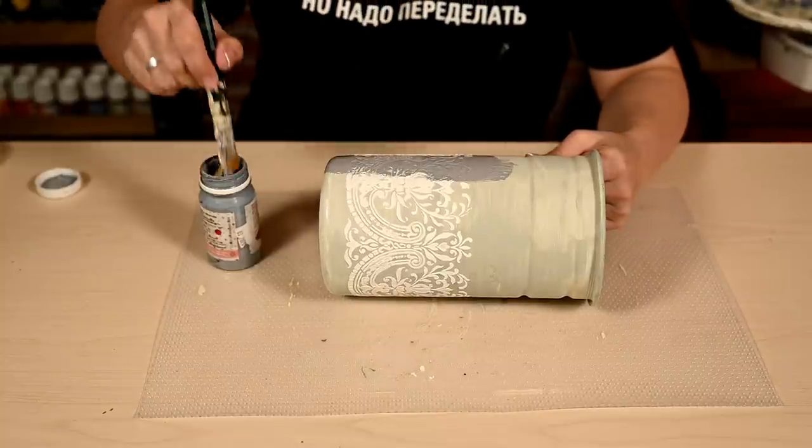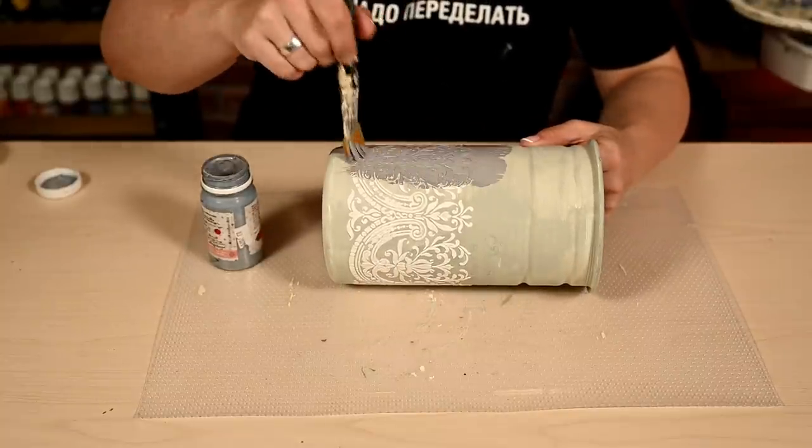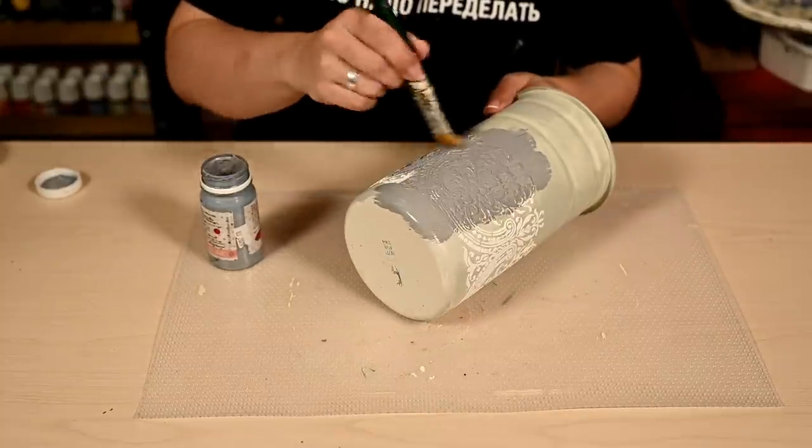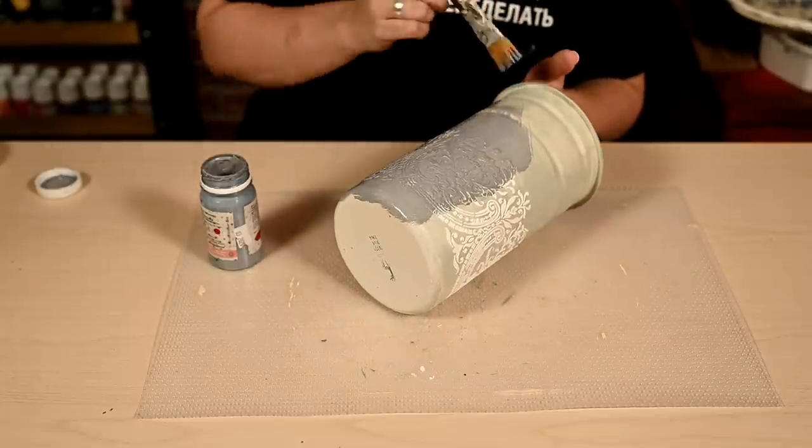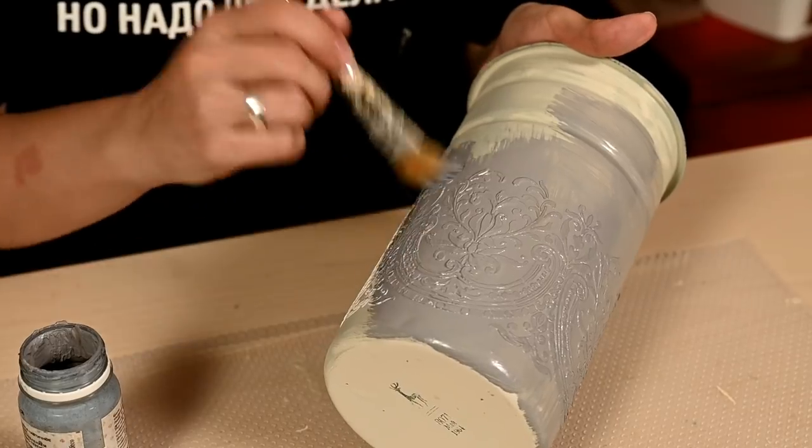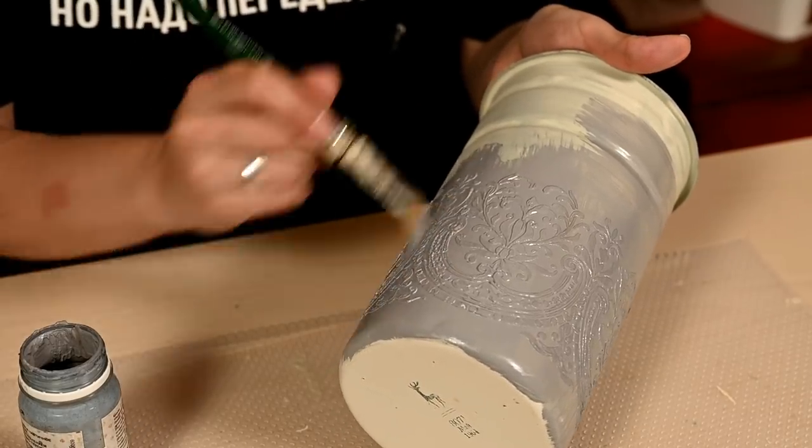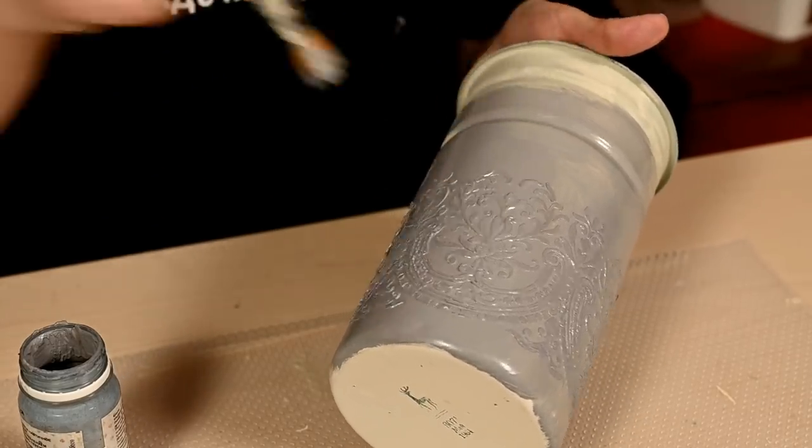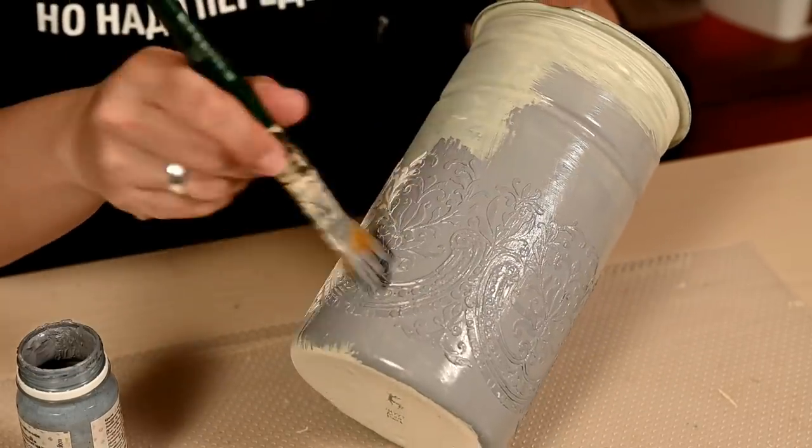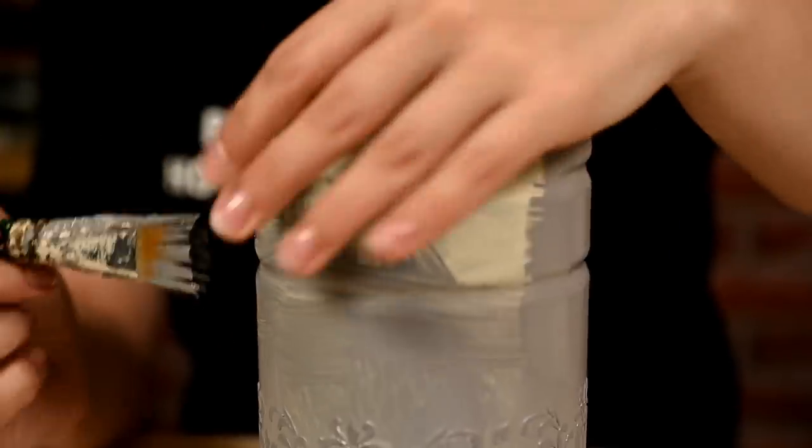I've decided to give this vessel faux zinc look. I have already shown you this technique many times. I love it very much. It's especially good for old metal items because they are made of real metal so no one can tell this zinc surface is not real. To do it, first I'm painting the whole thing gray.